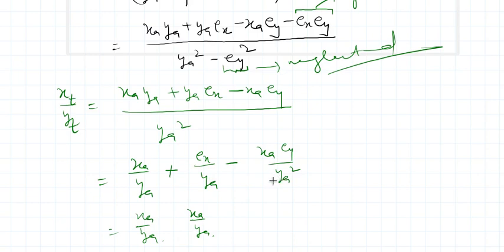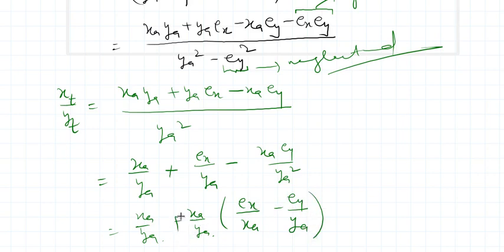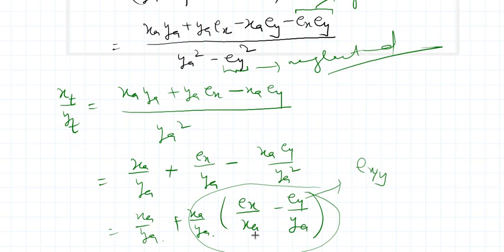That means x_a can be taken outside and the expression simplifies to e_x over x_a minus e_y over y_a. This is the error in division that propagates in our calculations. Next is the error in algorithm: how error will propagate in our algorithm. An algorithm contains a series of steps, not just a single multiplication or division.